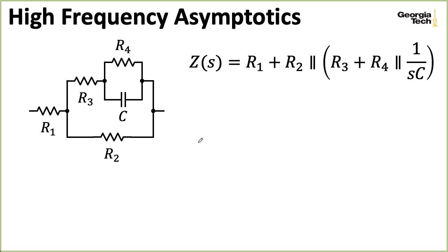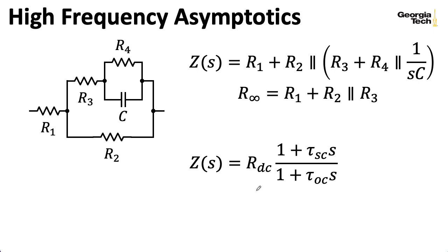Let's think about what this impedance looks like at high frequencies. So for very high frequencies, this capacitor is going to look like a short. So R4 is effectively getting shorted out. And in the algebra, that corresponds to this factor here going to zero. So this whole term here disappears. And we wind up with R1 plus R2 in parallel with R3. And I'll denote that as R infinity to indicate the resistance we get as omega goes to infinity.